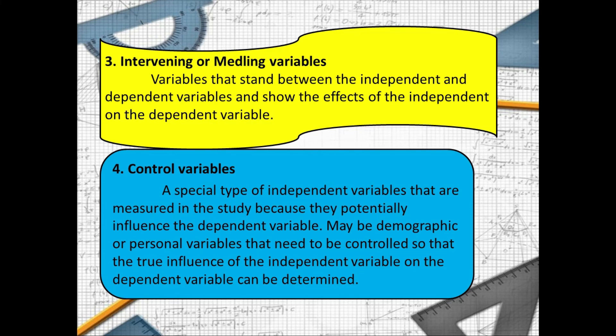The example of control variable are the family background of the respondents, educational attainment of the respondents, social status of the respondents, and more.